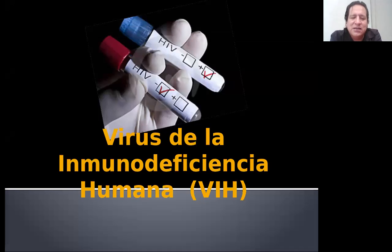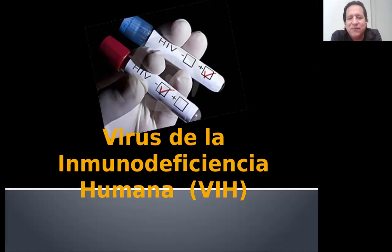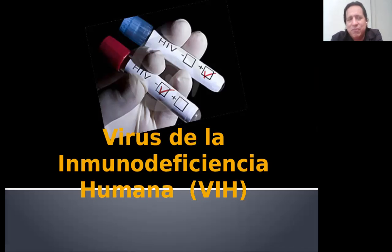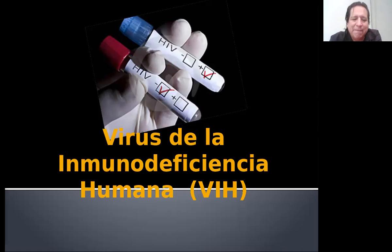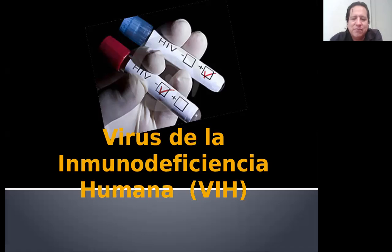El VIH es el virus, el que produce la enfermedad — no es la enfermedad. Cuando el virus entra al cuerpo produce infección. Por lo tanto, la infección por VIH tampoco es la enfermedad. Es cuando el virus está dentro del cuerpo; si bien está activo, no produce sintomatología. Por eso no lo conocemos como enfermedad, simplemente como infección por VIH. El SIDA — que es el síndrome de inmunodeficiencia adquirida — es una etapa en la cual aparecen ya síntomas, no producidos directamente por el virus, sino por varias enfermedades oportunistas que suelen atacar al paciente.